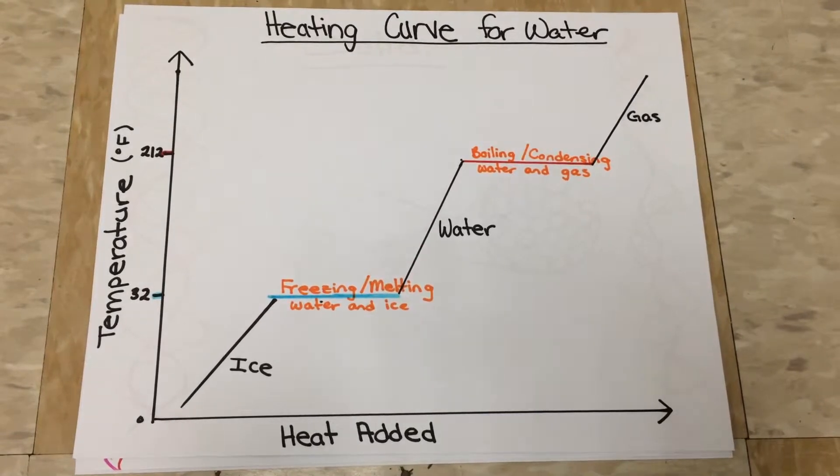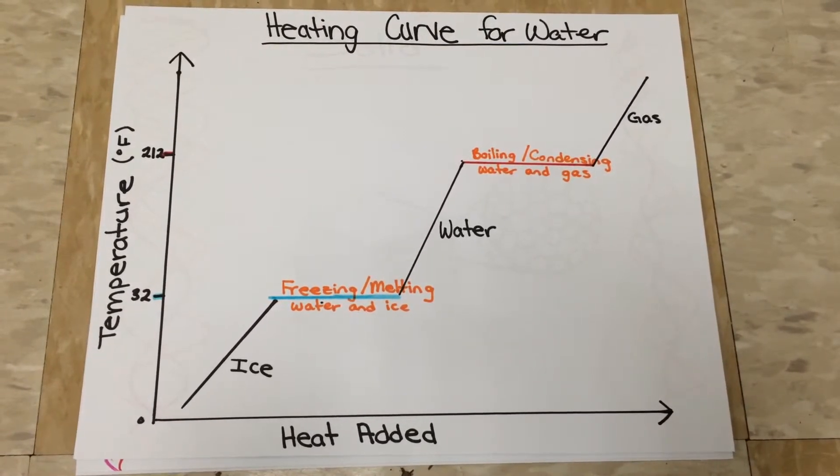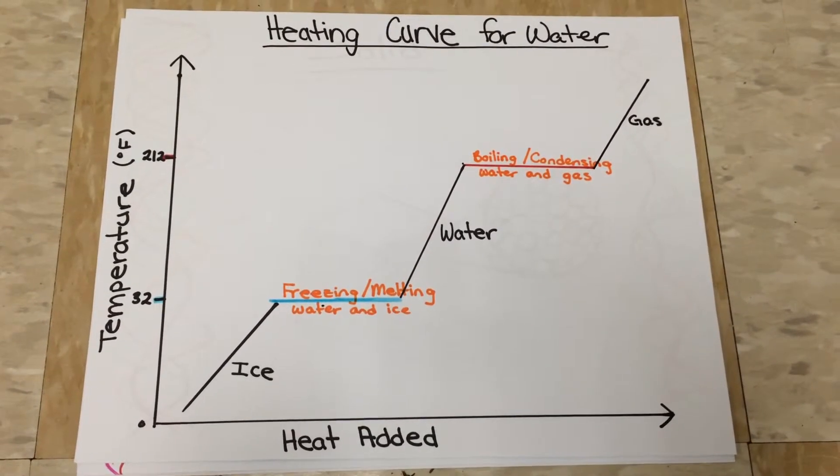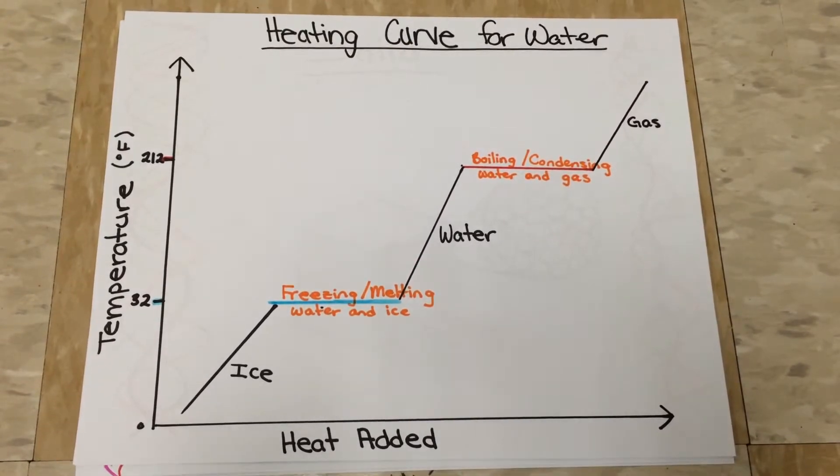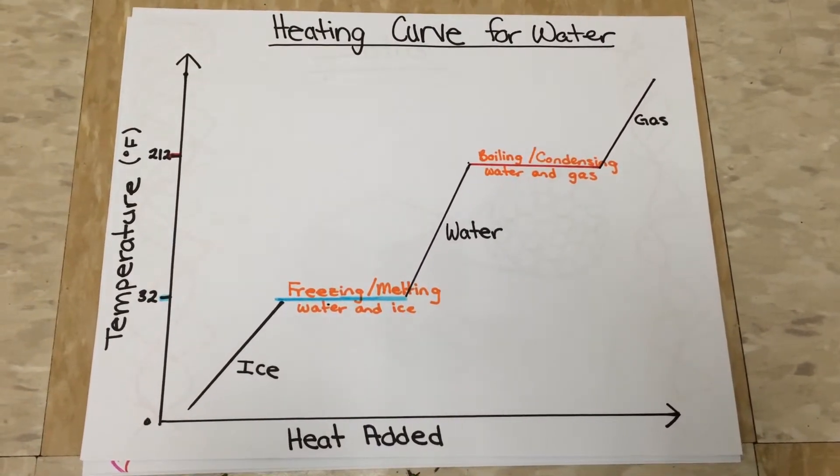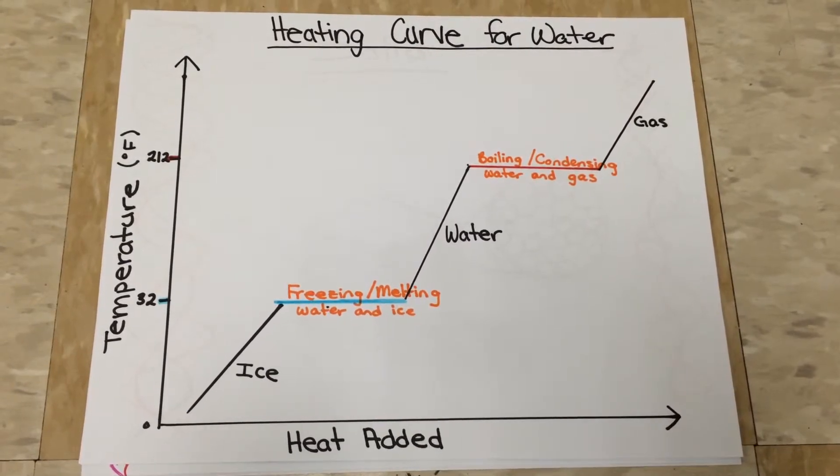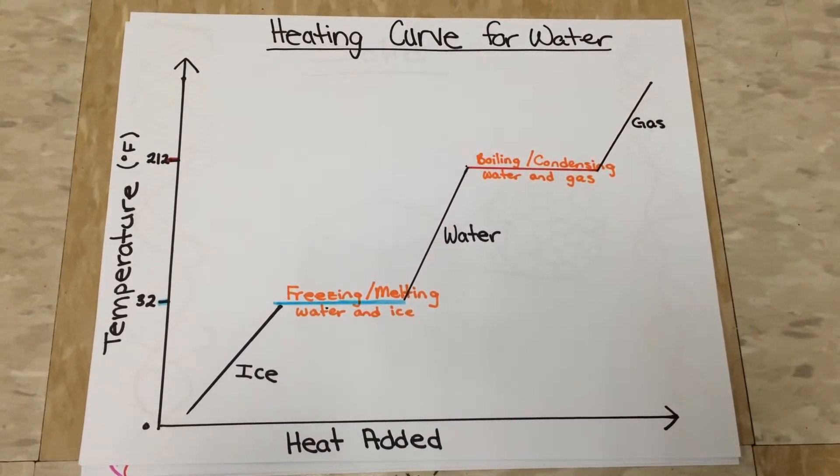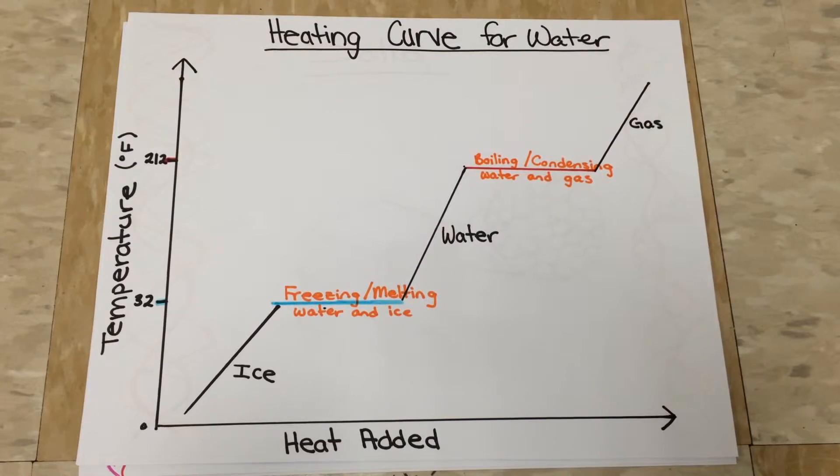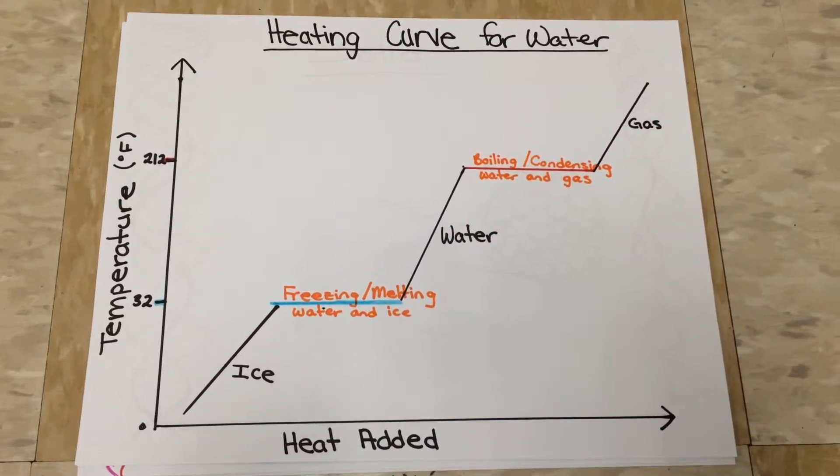This is a heating curve for water. As heat is applied to the system, the water turns from solid to liquid to gas. But during the phase changes from solid to liquid and liquid to gas, the temperature stays the same for the particles to create energy in order to change.